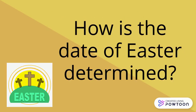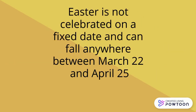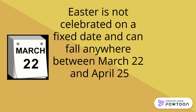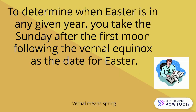For a Geography Minute, how is the date of Easter determined? Easter is not celebrated on a fixed date and can fall anywhere between March 22nd and April 25th. To determine when Easter is in any given year, you take the Sunday after the first full moon following the vernal equinox as the date for Easter.